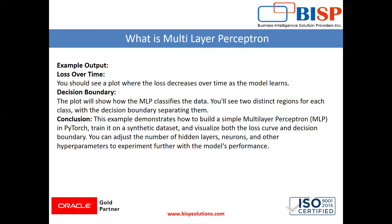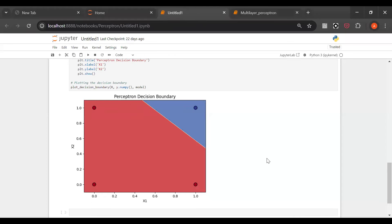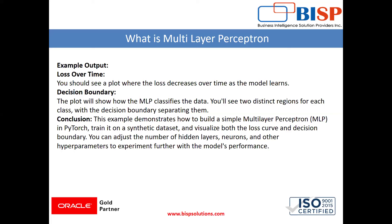Regarding loss over time, you should see a plot where the loss decreases over time as the model keeps learning. For the decision boundary, the plot shows how the MLP classifies the data — you will see two distinct regions for each class with the decision boundary separating them. The conclusion: this example demonstrates how to build a simple multilayer perceptron, train it on a synthetic dataset, and visualize both the loss curve and decision boundary.